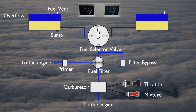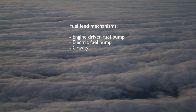The fuel system supplies fuel to the engine. Typically, fuel tanks are located inside the wings. Fuel is pressurized by an engine-driven fuel pump, and many airplanes are also equipped with a backup electric fuel pump.